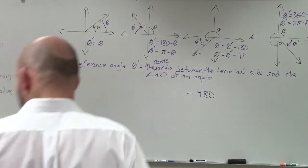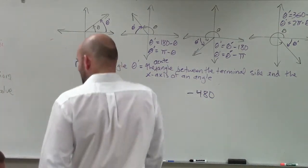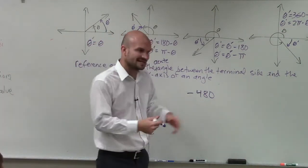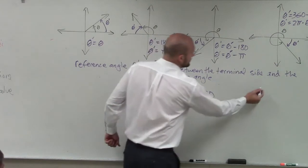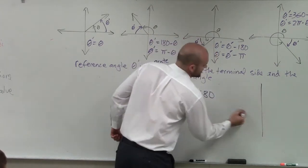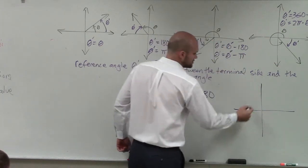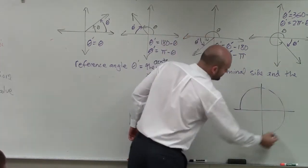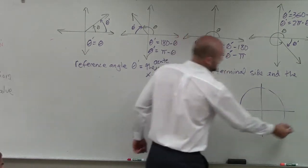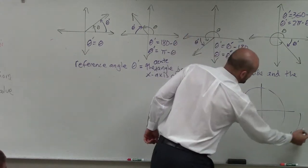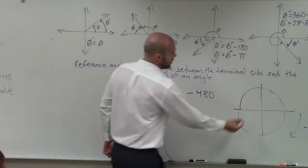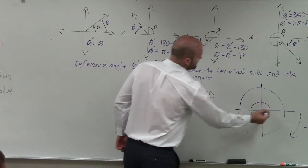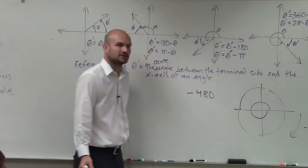If I was going to do the referencing of negative 480, the way I told you to do it is to sketch the angle. Now we're going in the negative direction. We know all the way around a circle — the negative direction is clockwise — so all the way around a circle would be negative 360 degrees.